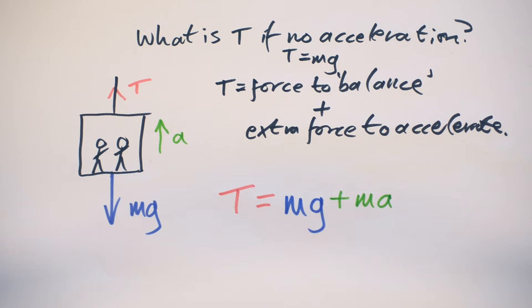And that's going to be Ma, because from Newton's second law, we know that F equals Ma, force is proportional to acceleration. And of course, we can factorize this just to have T equals M, brackets, G plus a.